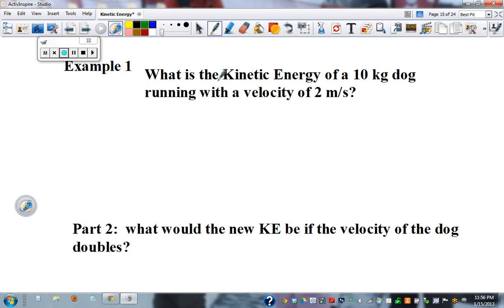So first question, what is the kinetic energy? So this is what we want, of a 10-kilogram dog running with a velocity of 2. So kinetic energy is our question. Mass equals 10. Velocity equals 2. Our formula, kinetic energy equals mass times velocity squared over 2.